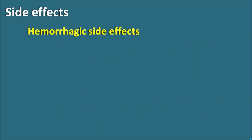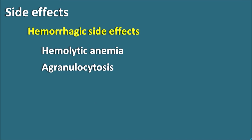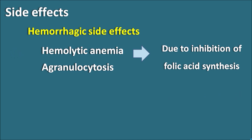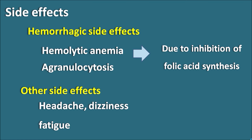Another side effect of sulfasalazine is hematologic side effects. Sulfasalazine can produce hemolytic anemia, agranulocytosis, and other types of anemia like megaloblastic anemia and aplastic anemia. All these anemic conditions are because of its effect on folic acid synthesis - as it is a sulfonamide, it inhibits folic acid synthesis, which leads to these hematologic side effects. Other side effects include headache, dizziness, and fatigue.